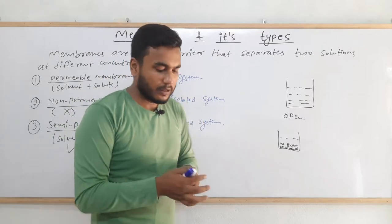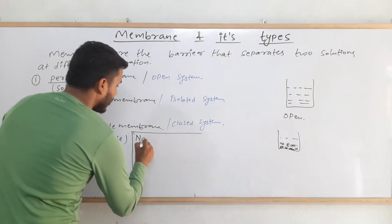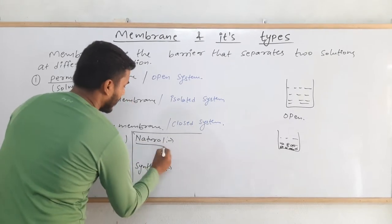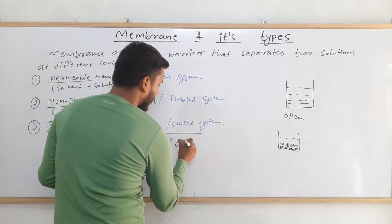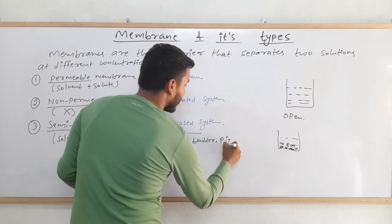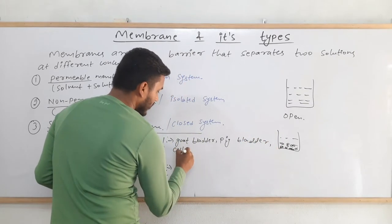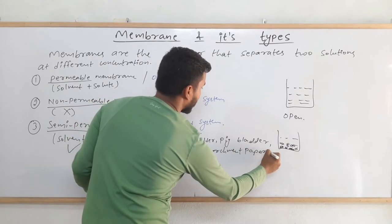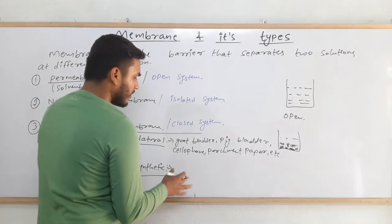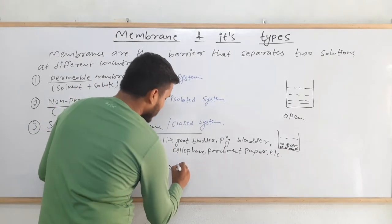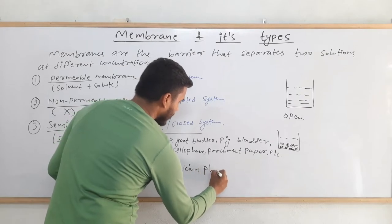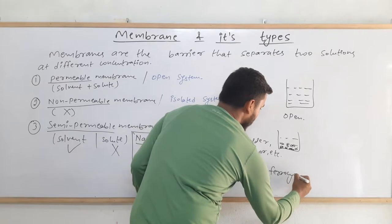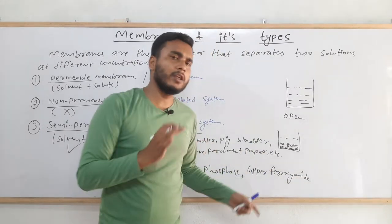There is another way to classify membranes as well. They are natural membranes and synthetic membranes. Natural membranes include goat bladder, pig bladder, cellophane, parchment paper, etc. If we talk about synthetic membranes, two very commonly used ones are calcium phosphate and copper ferrocyanide. Among them, copper ferrocyanide is frequently used in laboratories as well.